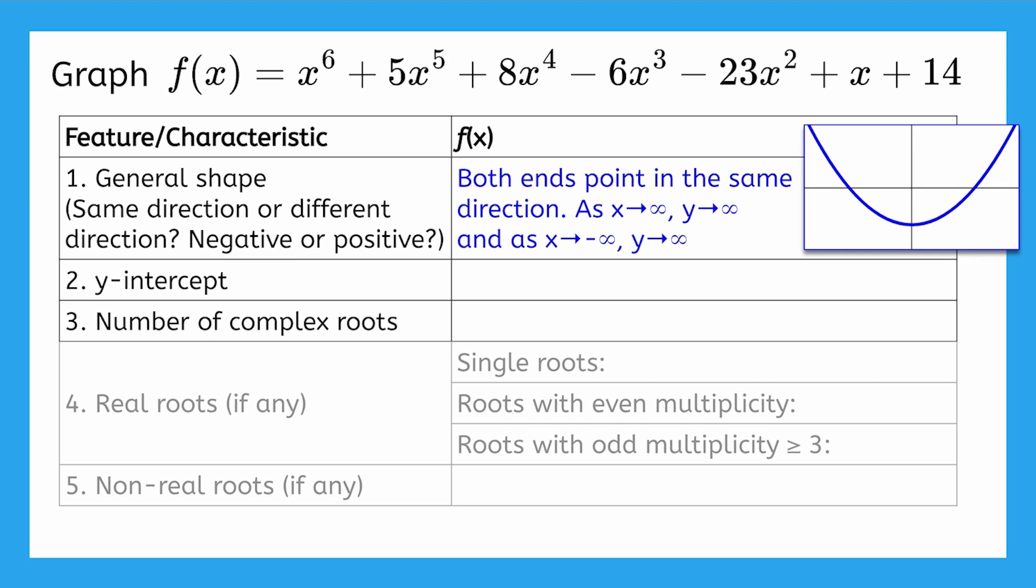Now onto line 2. Plugging in a 0 for x and simplifying will give us the y-intercept, but remember that when a polynomial is in standard form, we can simply look at the constant term. Our y-intercept is 0, 14.